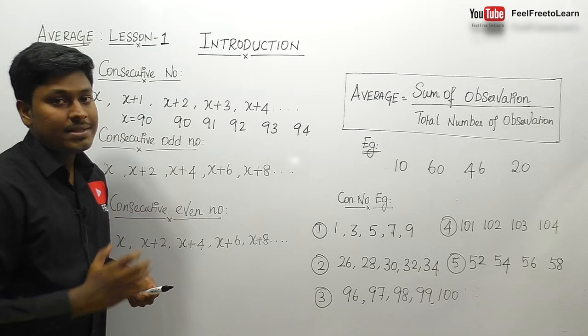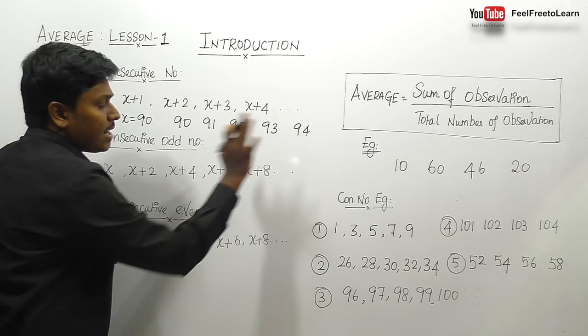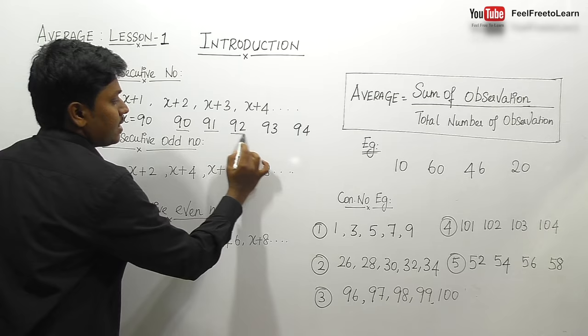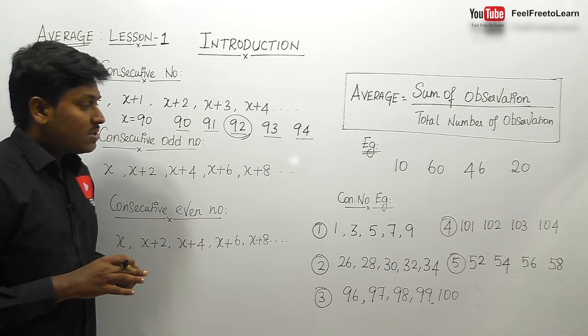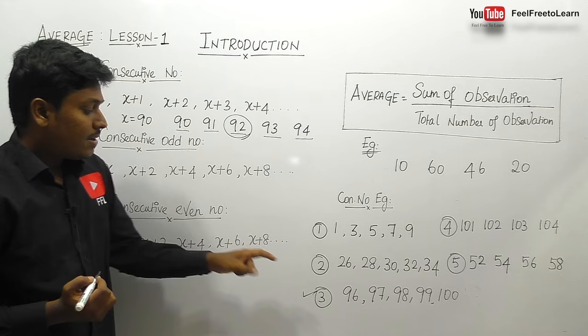If the numbers are consecutive, the center number will be the average. For example, the numbers 90, 91, 92, 93, and 94 — there are five numbers, so the center number is 92. We can directly say that the average of these five consecutive numbers is 92.